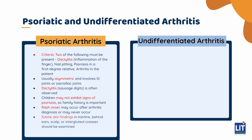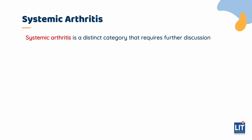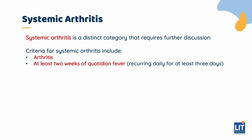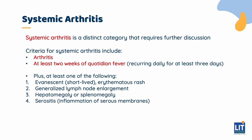Undifferentiated arthritis, as the name implies, includes arthritis that does not meet any of the criteria, or meets criteria for more than one category. Systemic arthritis is a category which requires its own lecture, but briefly, the criteria includes arthritis and at least two weeks of fever, which must be quotidian — meaning recurring daily for at least three days — plus at least one of the following: an evanescent erythematous rash, generalized lymph node enlargement, hepatomegaly, splenomegaly, or serositis.